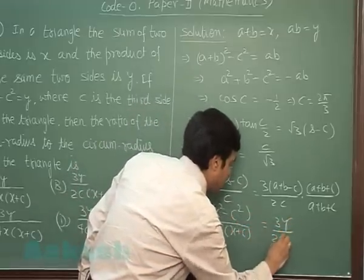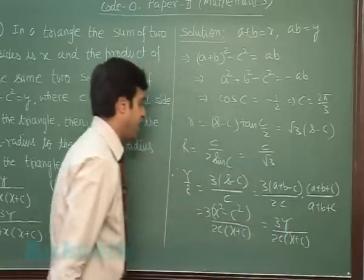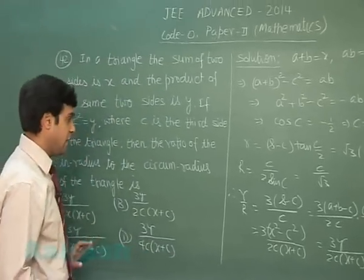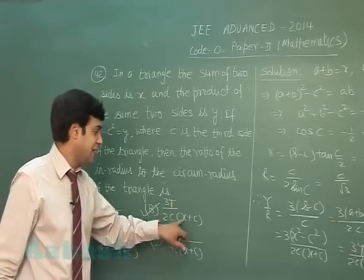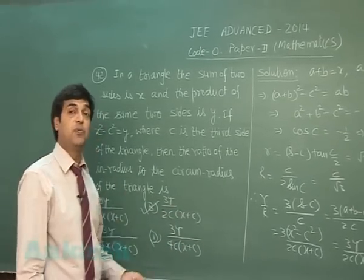So it is 3Y upon 2C times X plus C as the final result. From the given options, we can clearly see B is correct: 3Y upon 2C into X plus C. Let's move to the next question.